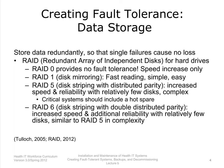RAID 5 is data striping with distributed parity and requires a minimum of three drives, with standard configurations using four to six drives. A series of data blocks are spread across all drives in a stripe, similar to RAID 0. However, for each stripe, an additional parity block is created by the system and stored in the stripe, distributing the parity blocks across drives for different stripes. In the event of a drive failure, this parity block, along with all remaining blocks in the stripe, is used to mathematically calculate the value of the block on the missing drive. In this way, even though each block is only stored once, all data is available even after failure of a single drive.